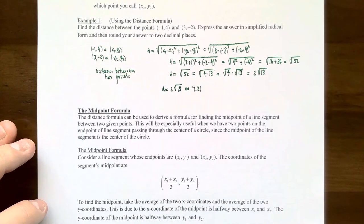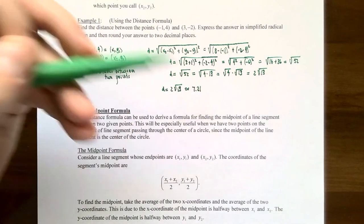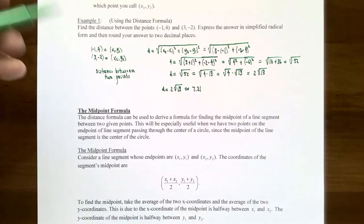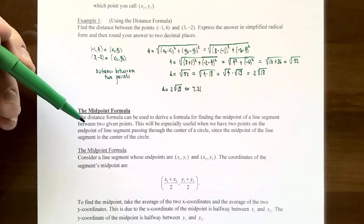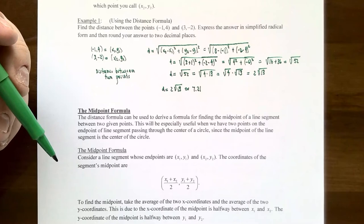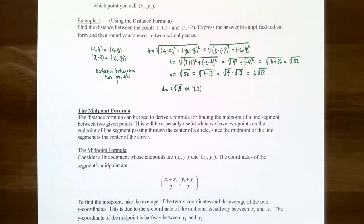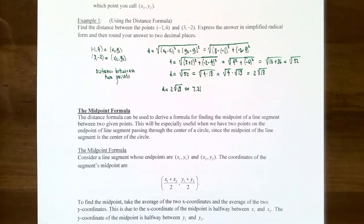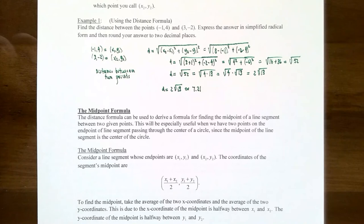Now let's talk about the midpoint formula. The difference between the distance formula and the midpoint formula: the distance formula gives you a number as the answer, because you're talking about a measurement. The midpoint gives you a point — an x coordinate and a y coordinate. You can derive the midpoint formula by thinking about what the midpoint actually means. One application: if you have two points at the ends of a diameter of a circle, the midpoint is the center of that circle.